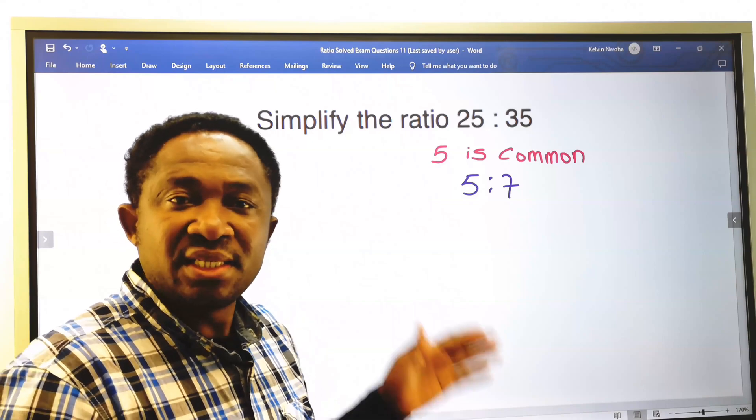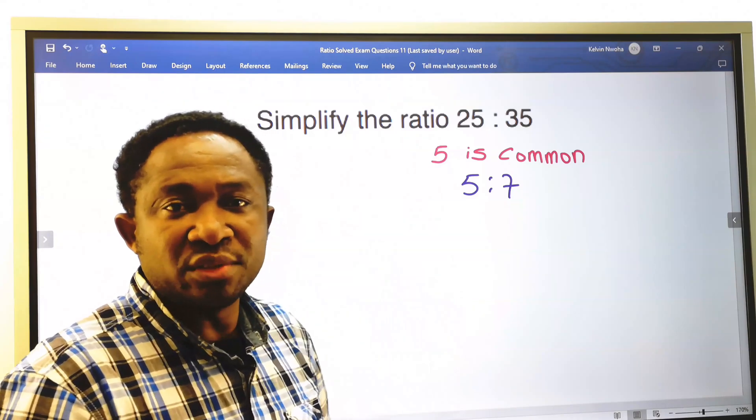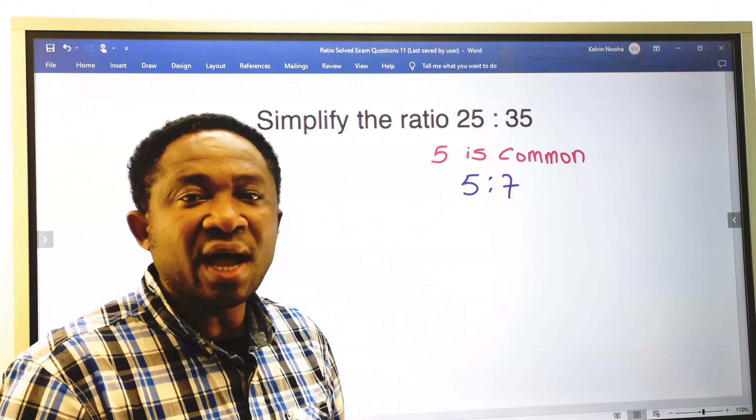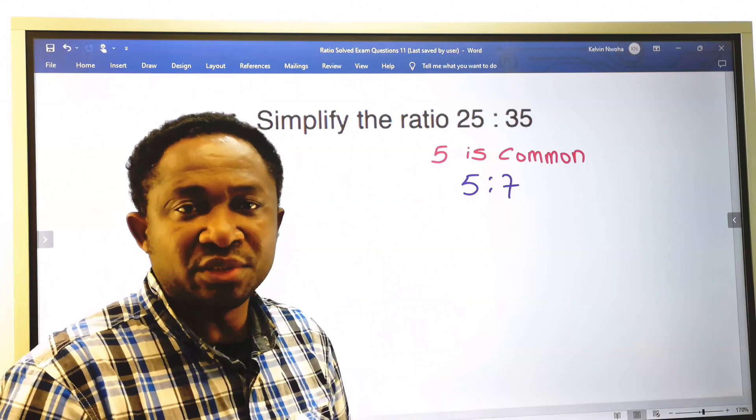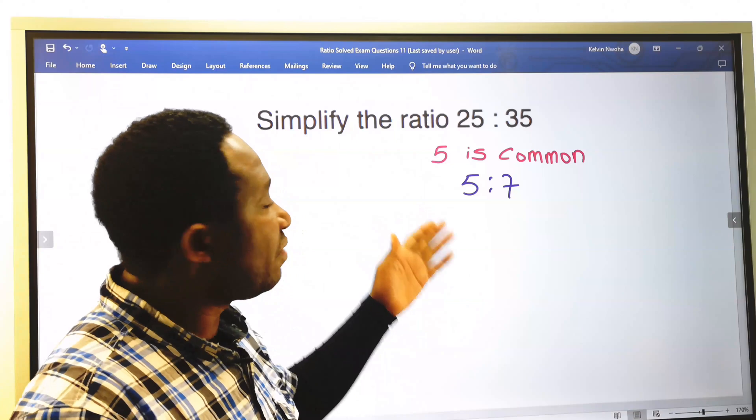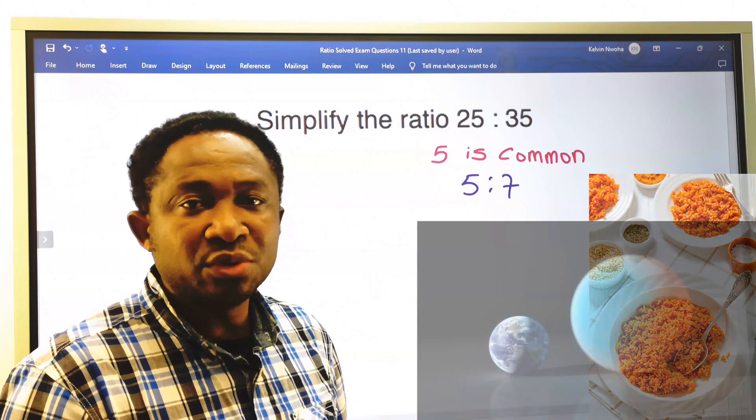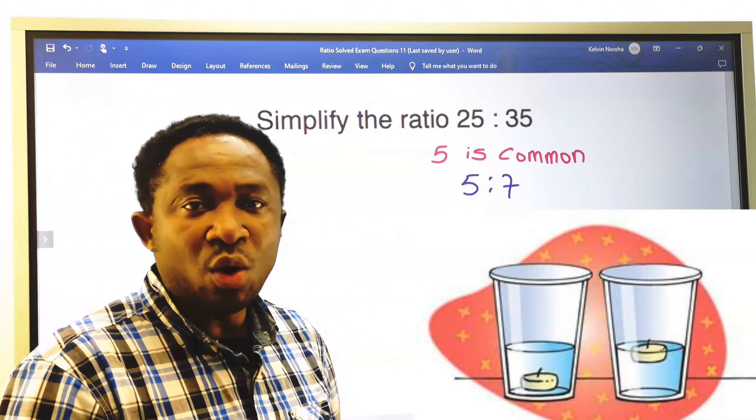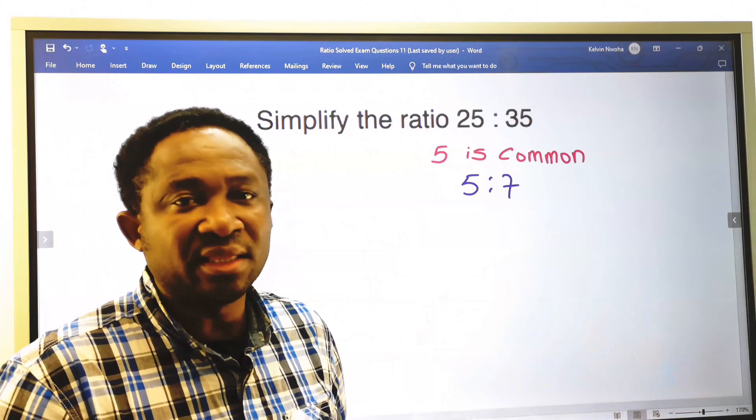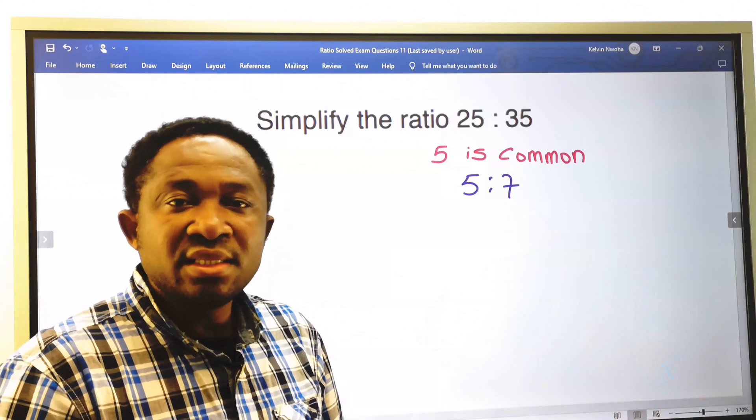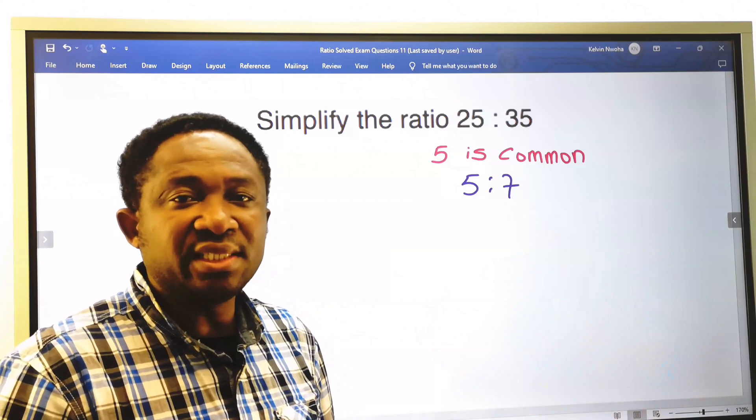But the disadvantage of this question is that we do not have any further information about 25 and 35. This ratio could be comparing amount or size or volume or anything. Again, there is no description of the item.